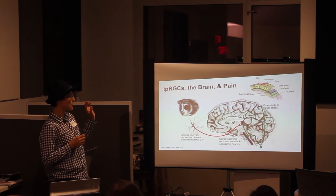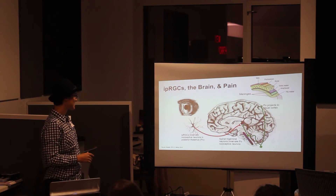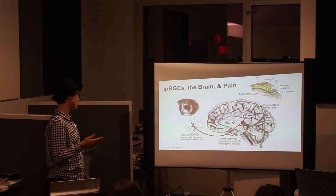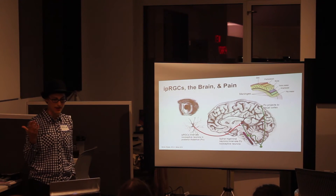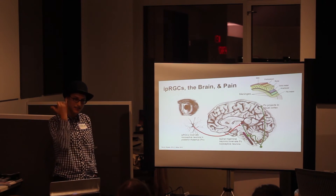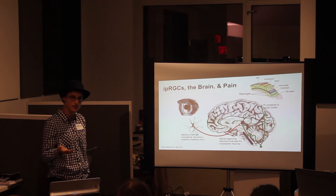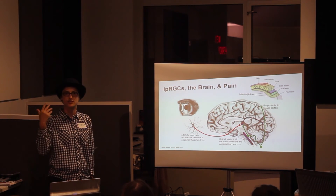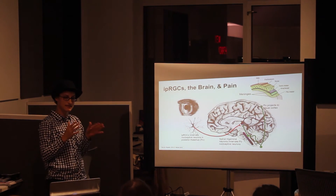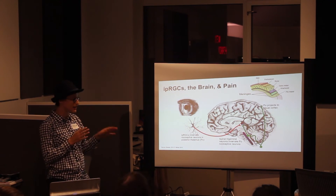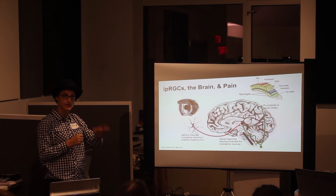Without going into a full brain-eye explanation: we have the retina with cones, rods, and IPRGCs — intrinsically photosensitive retinal ganglion cells discovered about 20 years ago in humans. They don't primarily contribute to vision but mainly to non-visual functions like the circadian system. In the last six to eight years, researchers found a possible connection between IPRGCs and the pathways responsible for migraines.